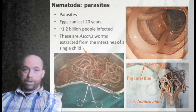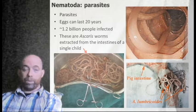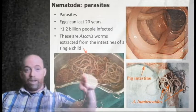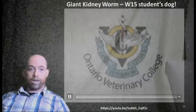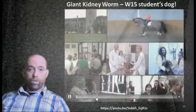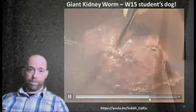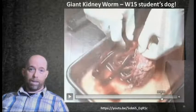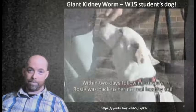There are also many nematode parasites — eggs once released into the world can last upwards of 20 years, and more than 1.2 billion people are estimated to be affected by nematode parasites. The image shows a bowl-like mass of Ascaris nematodes extracted from the intestines of a single child. There are also pig and dog examples — one dog named Rosie, a student's pet from 2015, had a rough time and had many kidney worms extracted but is feeling much better now.